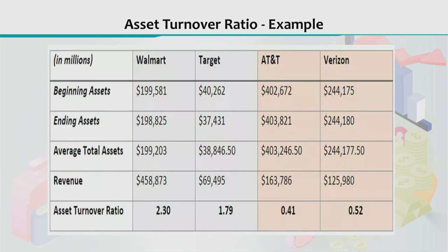On the contrary, for retail or grocery stores like Walmart and Target, the asset turnover ratio is higher because they do not have as many total assets compared to a telecommunications company like AT&T. If you compare the total assets, you can clearly see the difference, and that is why their asset turnover ratio values are above 1. Walmart's value is 2.30.